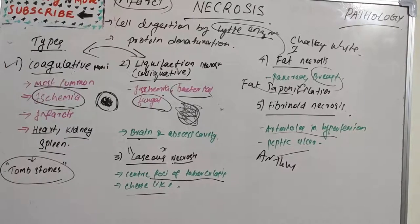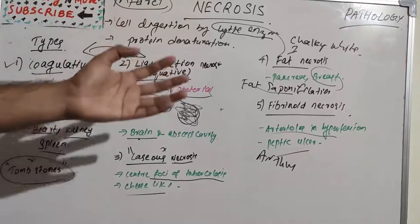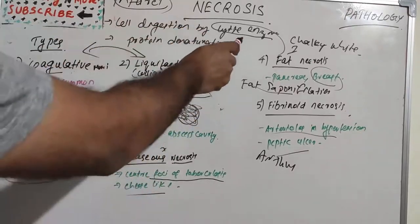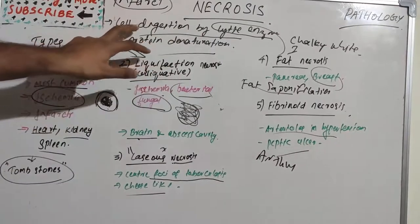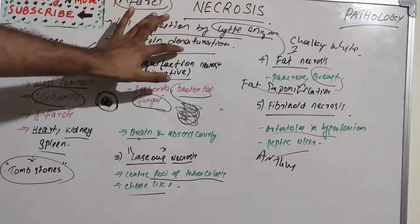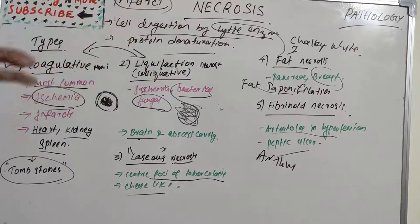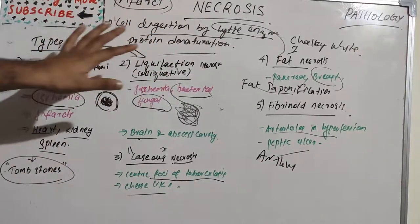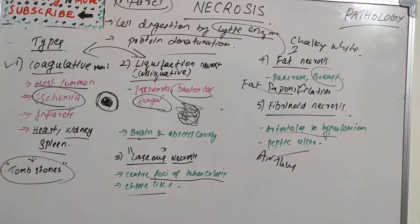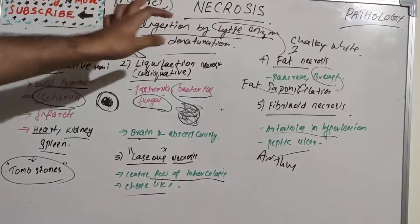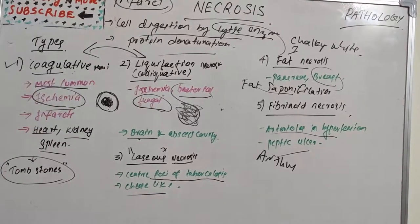Necrosis is the death of cells, and the two features common to all types of necrosis are protein denaturation and cell digestion by lytic enzymes — these indicate the cell is dead, denatured, and necrosed. These are very important for essay questions; coagulative and liquefaction necrosis could be asked as separate short notes. I'll come up with a new topic in pathology — thank you.